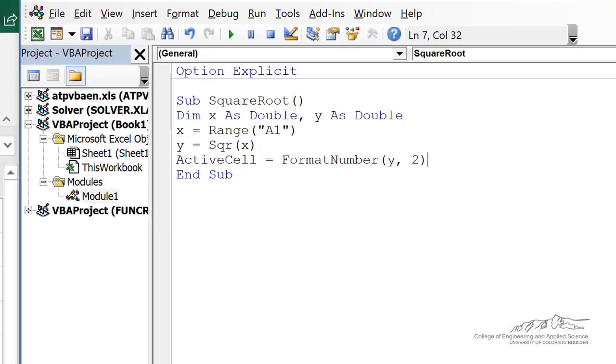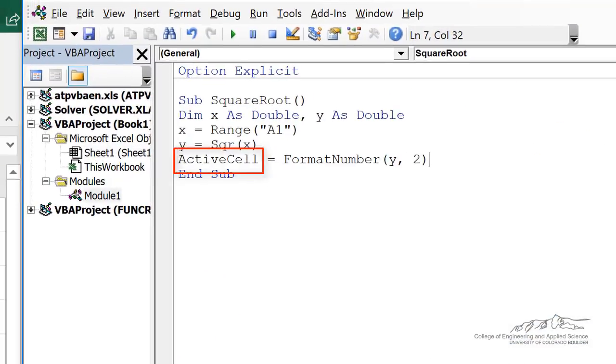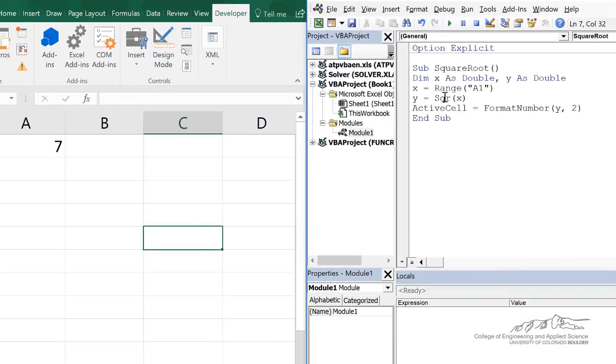Or for part B, into the active cell. So I run that. My active cell is C5. So let's run that. Okay.